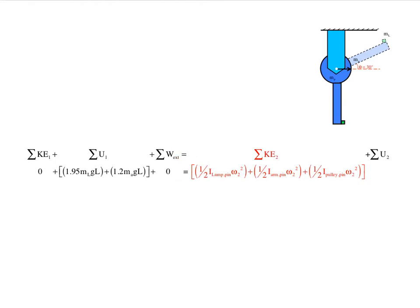The kinetic energy at the end of the interval is going to be the sum of the kinetic energies rotation-wise due to the lump, the arm, and the pulley as they swing through the vertical. And lastly, there's no potential energy at the end of the interval.